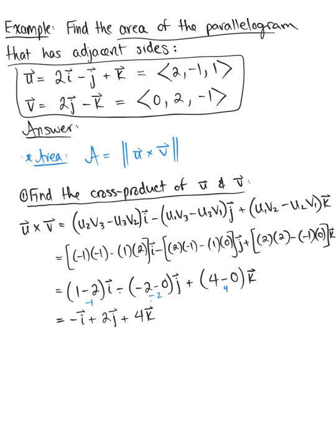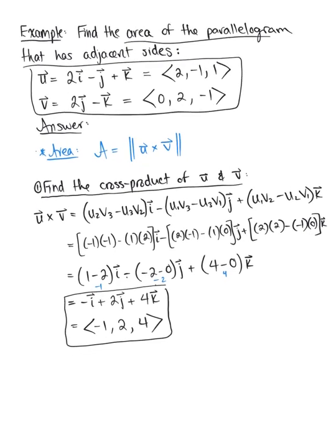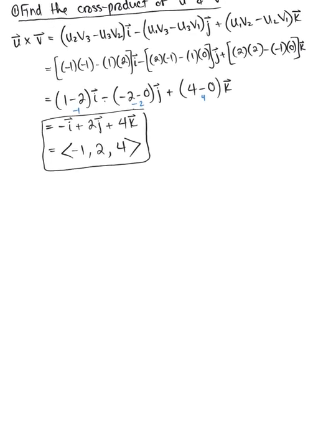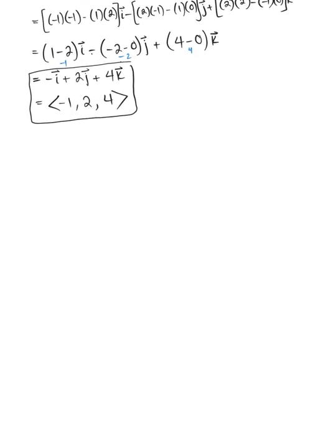Rewriting in component form, the cross product is (-1, 2, 4). Either form is valid for the cross product, but now we need to find the magnitude of this cross product.